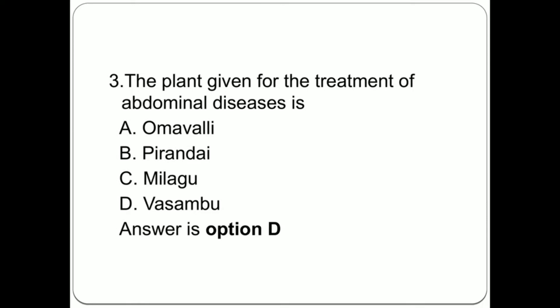Question 3: The plant given for the treatment of abdominal diseases is: Options A. Omavalli, B. Pirandai, C. Milag, D. Vassambu. Answer is option D, Vassambu.